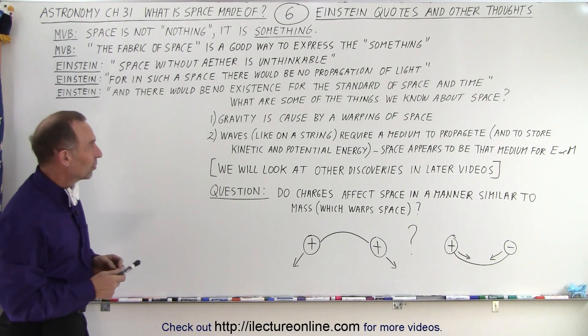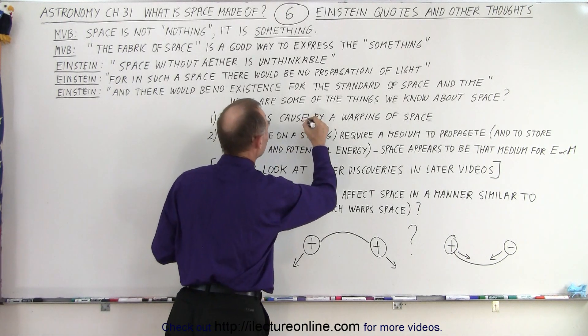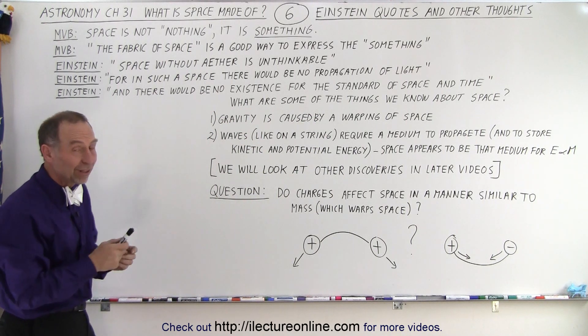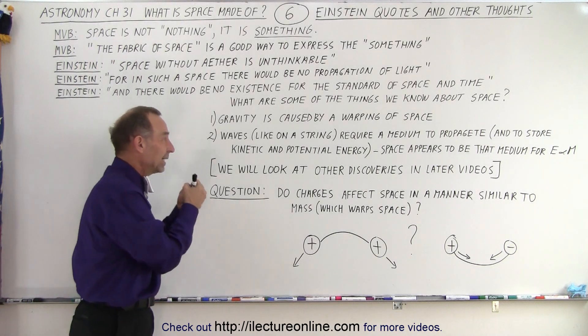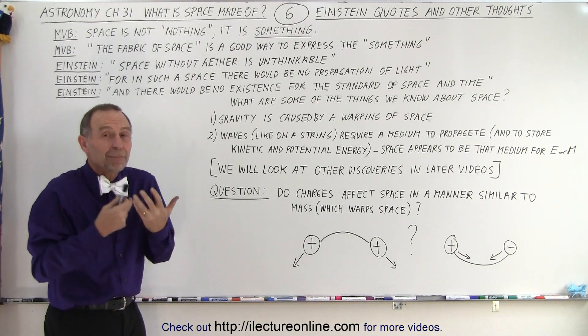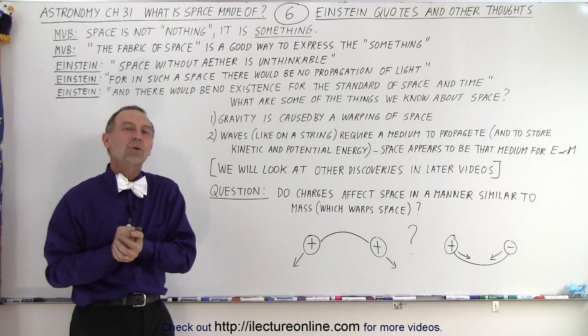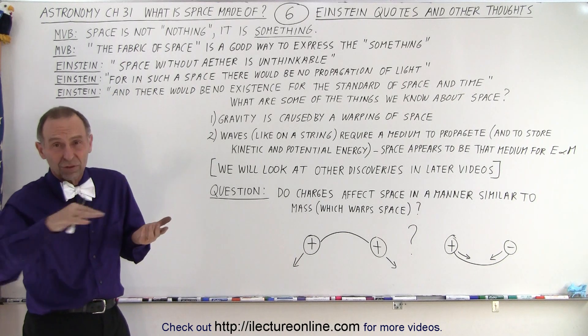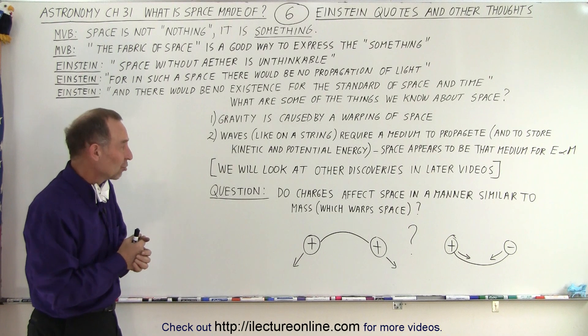Some things that we know about space: We know that gravity is caused by warping of space. We also know that waves, like waves on a string, require a medium to propagate and to store kinetic and potential energy for those waves to propagate. We think that space appears to be that substance, that medium along which electromagnetic waves travel as well. Space in a way is like a string to waves on a string. Space must be the medium on which electromagnetic radiation travels.